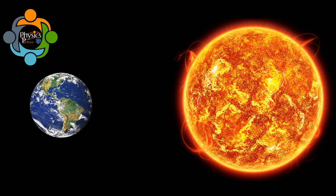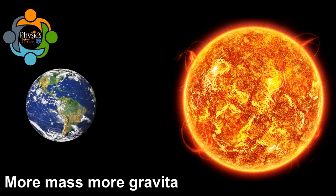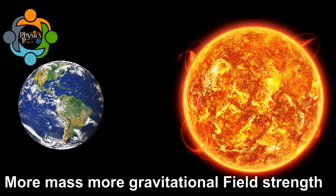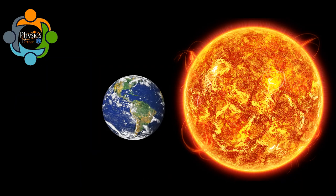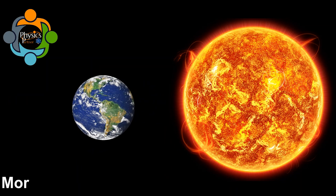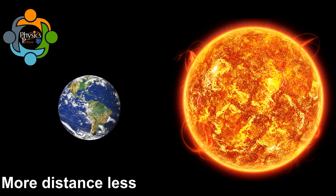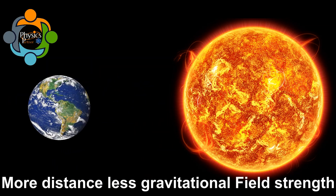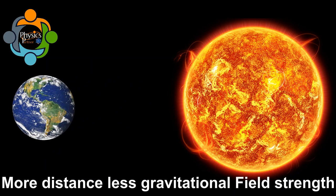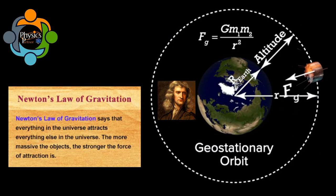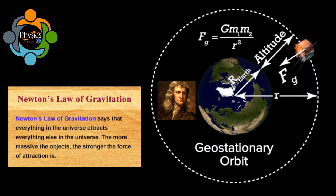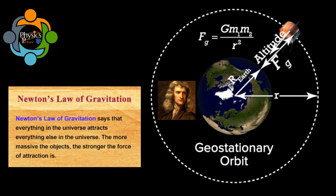At the surface of a planet, the gravitational field strength depends on the mass of the planet — if the mass is greater, the gravitational field is also greater. The gravitational field strength is weaker with increasing distance, meaning more distance means less gravitational field. This phenomenon is also explained by Newton's law of gravitation.